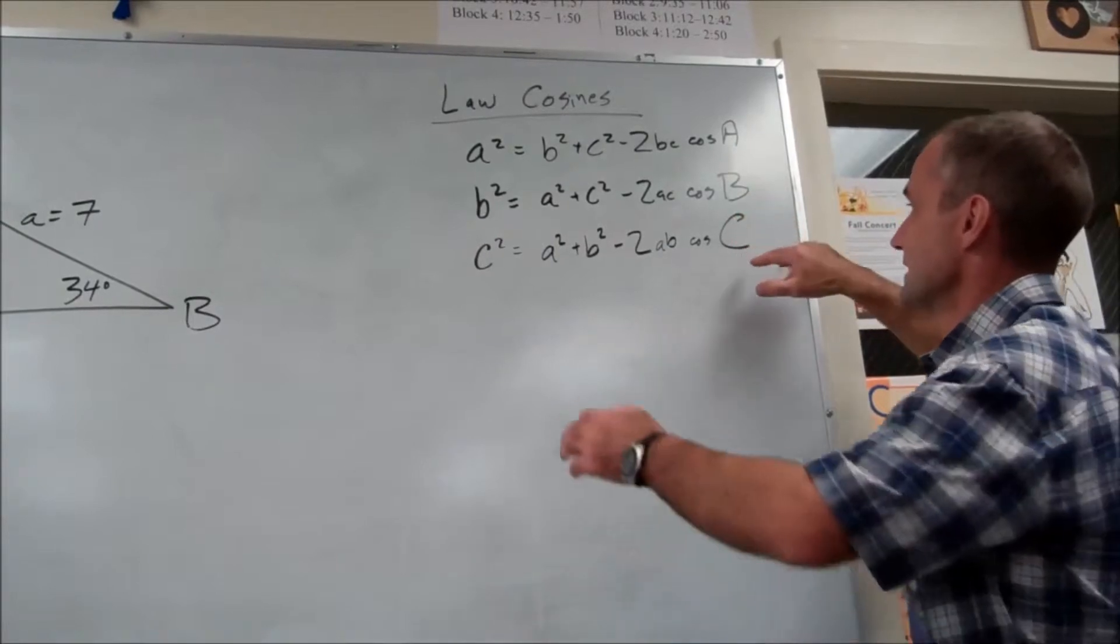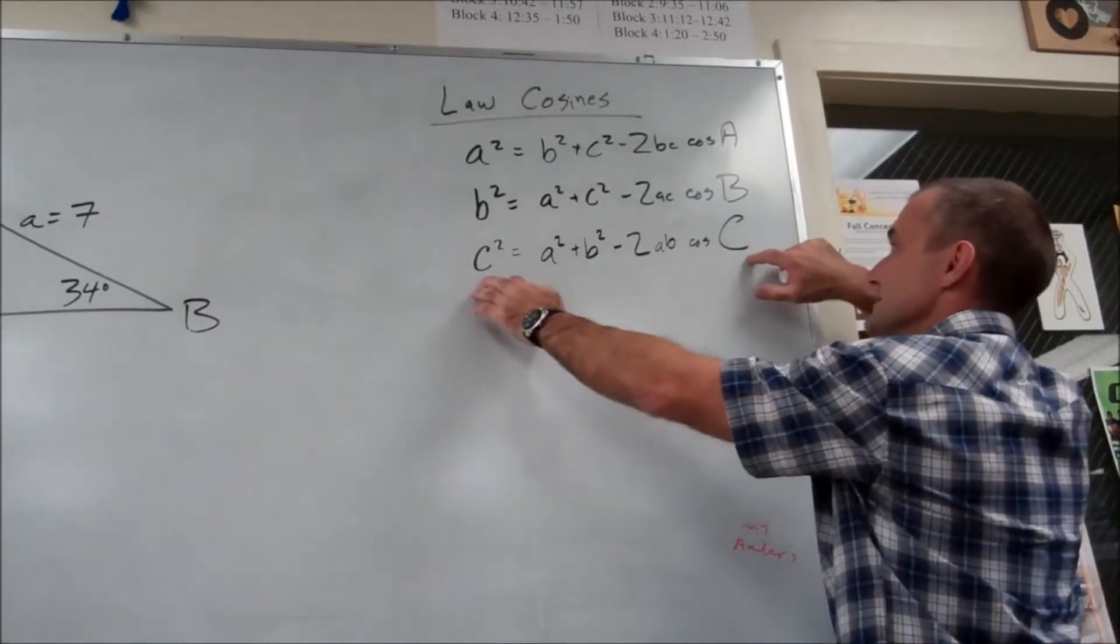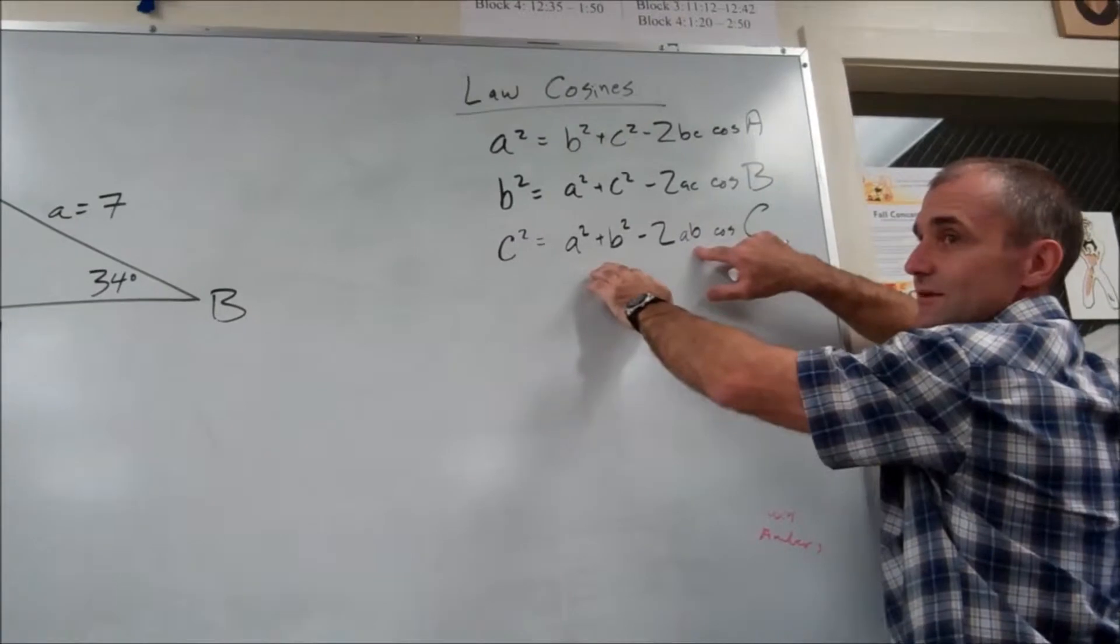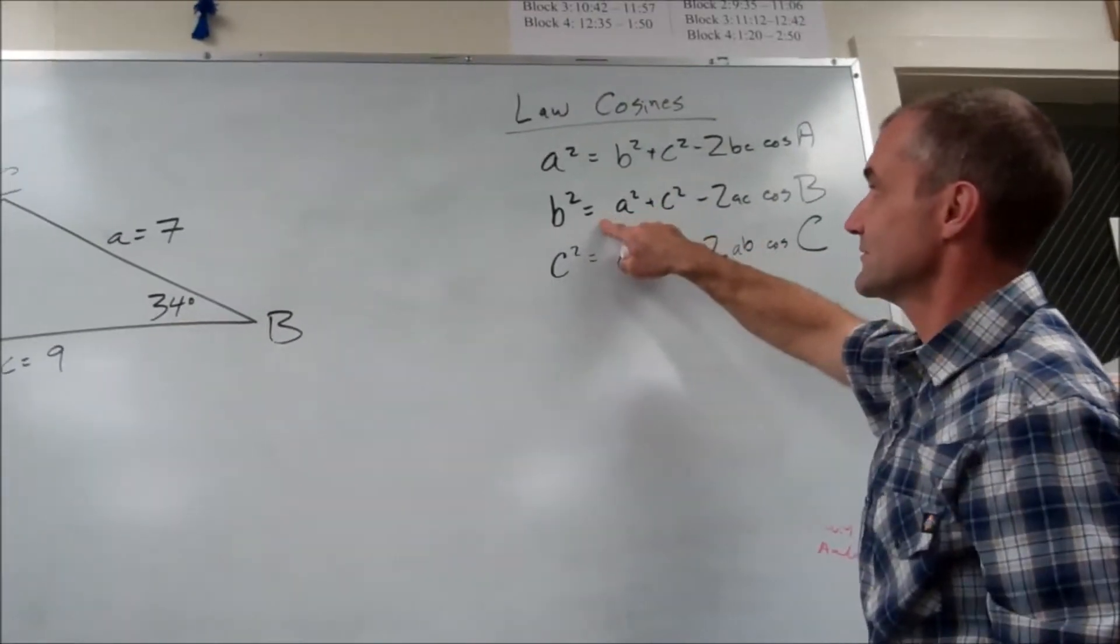A squared plus B squared minus 2AB cosine of C. So there are three variations, but the thing to remember, this side, this angle correspond, these two sides correspond to these two sides.